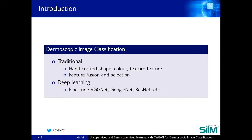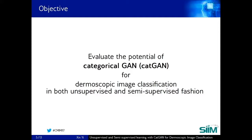But for further improving the performance, a much larger labeled dataset can be required for supervised training. To obtain a dataset on the scale of ImageNet is hard for dermoscopy, either because it could cost too much, or simply we just don't have enough dermatologists for labeling. So in this work, we try to evaluate the potential of an unsupervised and semi-supervised learning method called CATGAN as a feature learner for dermoscopy image classification.